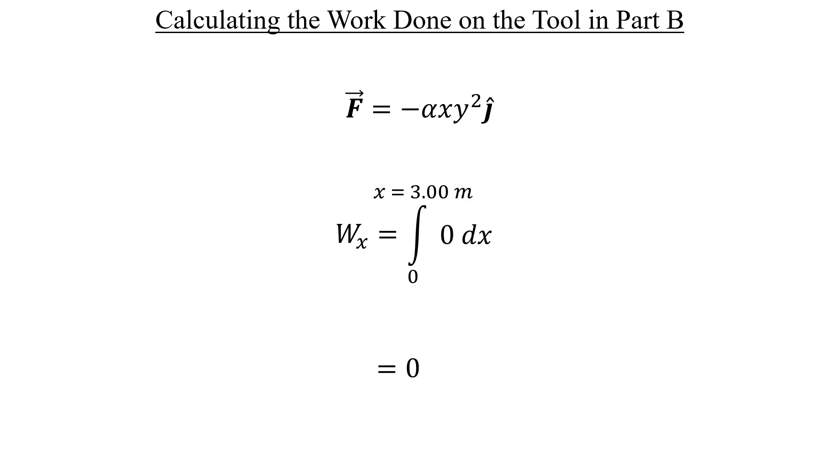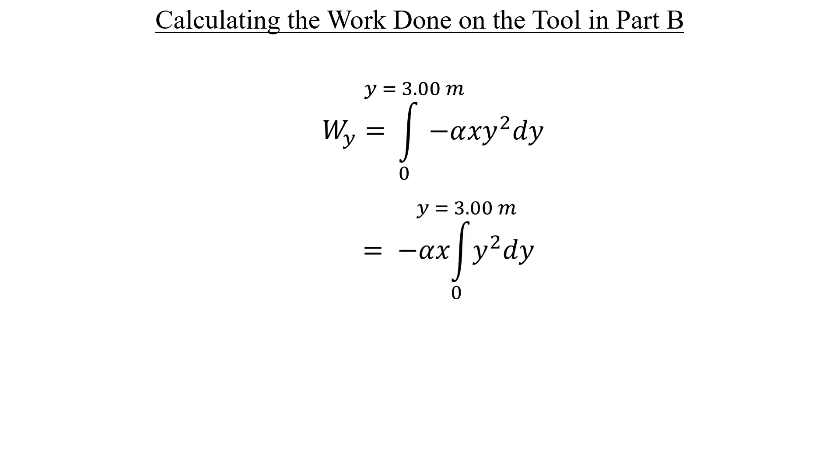What about in the Y direction? Well, X is a constant 3 meters, and we're increasing Y from 0 up to 3. So the result will definitely be a non-zero number. We can start by factoring out negative alpha again. And since X is constant along this path, at least in the second part, that can be factored out too, like this.